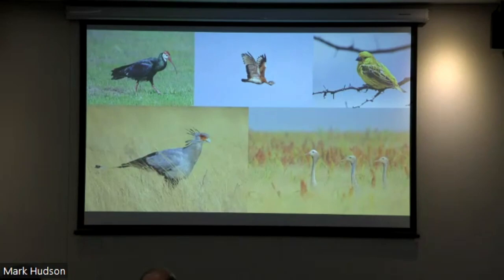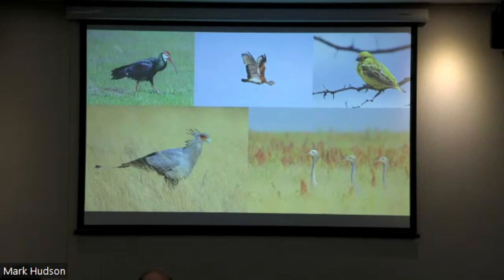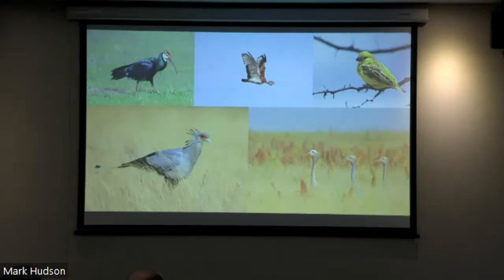We have three endemic and near-endemic species: our national bird, the Blue Crane, in the bottom right corner — an adult bird with its two nearly grown chicks. We also have Southern Bald Ibis in the top left, White-bellied Bustard in the top centre, the really scarce and localised nomadic Cuckoo Finch in the top right, and the regal Secretary Bird in the bottom left, which are at home on these open grassy plains.